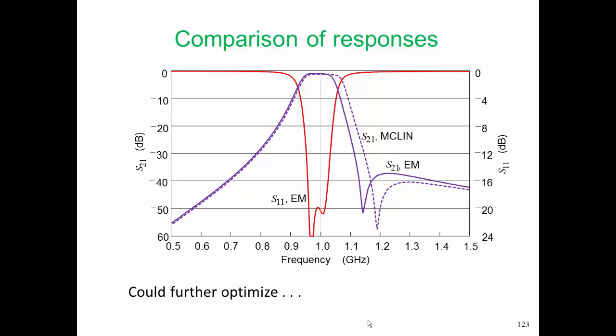After setting everything up and running a simulation, these are the results. The EM simulation probably takes about a thousand times longer than the MCLIN-based simulation. Here I've plotted the S21 responses for the MCLIN-based analysis and the EM. Looking at the S21 responses, they are essentially the same. Below the center of the passband they match very closely, but we notice the bandwidth is a little bit less with the EM analysis, indicating that the coupling is a little bit less. We also notice that this notch has moved.